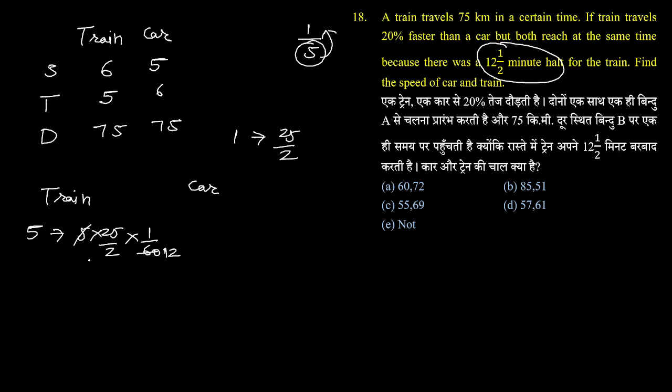So this is time. Distance is 75, speed equals distance upon time. Distance 75, time 25 by 24. 24 चला जाएगा उपर, 75 into 24.